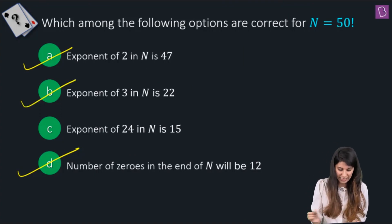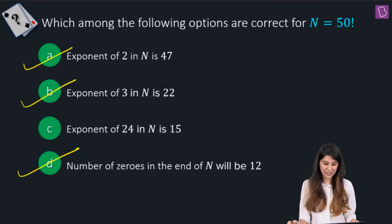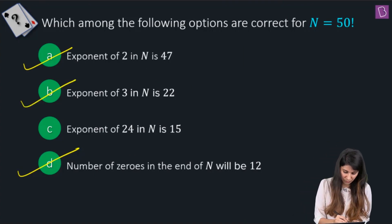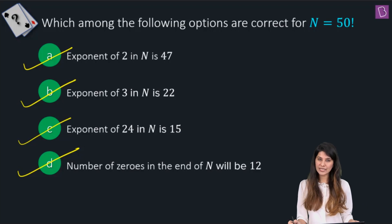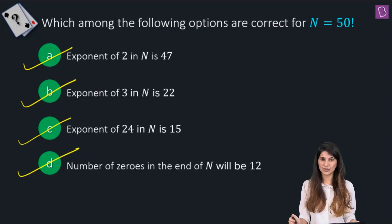So the final answers: exponent of 2 is 47, exponent of 3 is 22, exponent of 24 is 15, and there are 12 zeros at the end. All options A, B, C, D are correct.